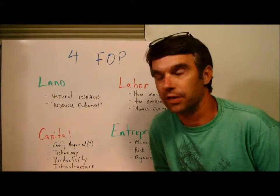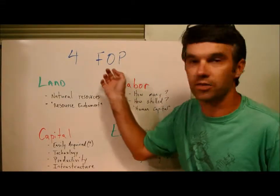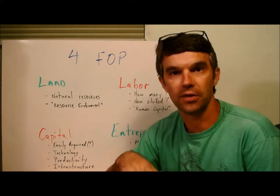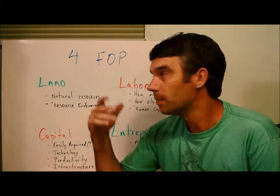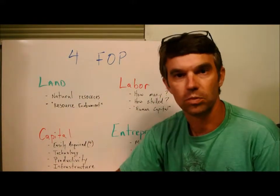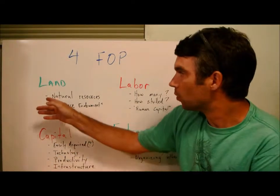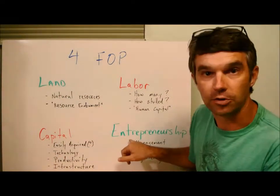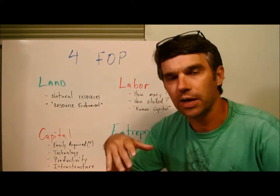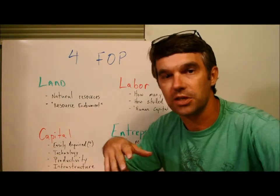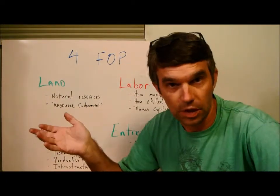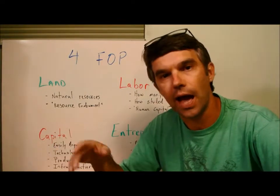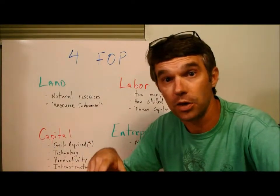Today I want to talk about the four factors of production. I want to go a little bit more in depth — I introduced them the other day, but now we're going to get to know them well. Real quickly, they are land, labor, capital, and entrepreneurship. I'm going to give just a quick definition of each. Look them up in your book, find them in a couple of other sources — I imagine they'll all be pretty similar.